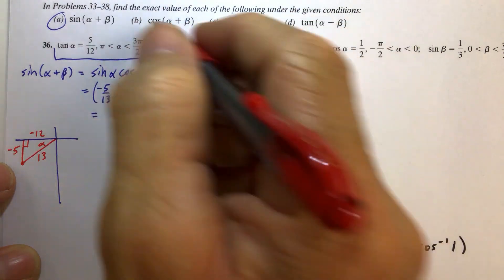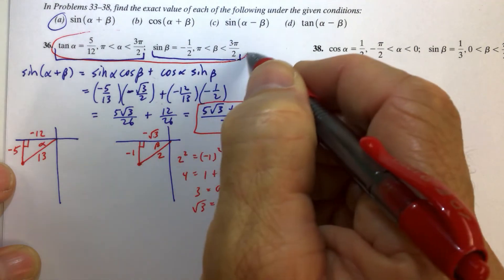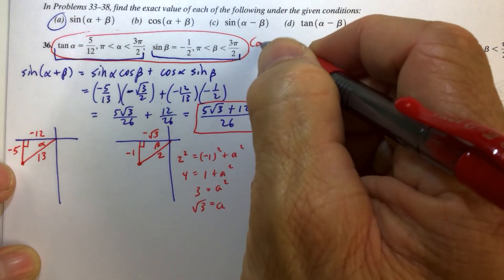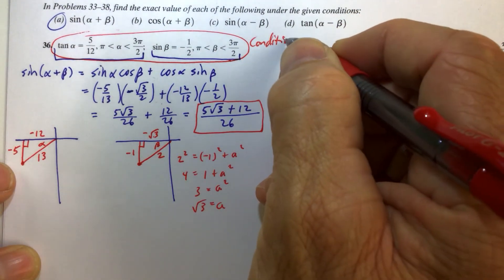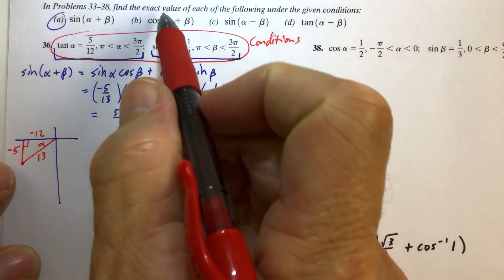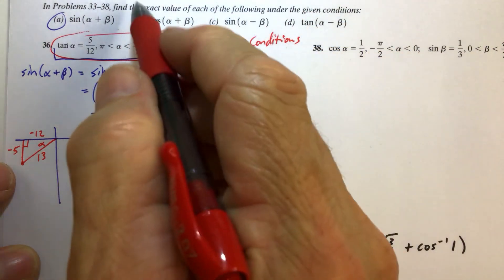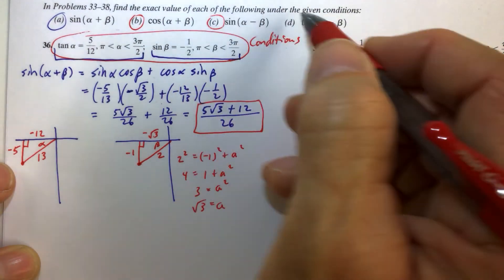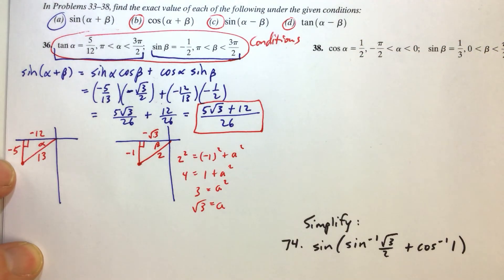These are the conditions, and you're finding the exact value of each of the following: A, B, C, and D. You really only need to do a couple of these problems to really get the idea of what's going on and to practice the formulas.